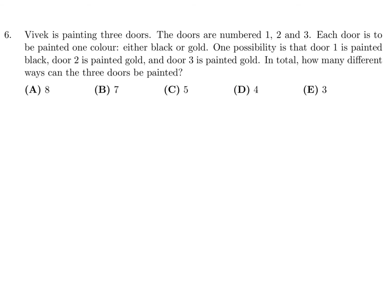Vivek is painting three doors numbered 1, 2, 3. Each door is to be painted one color, either black or gold. In total, how many different ways can the doors be painted? Three doors, two choices for each door - black or gold. You just multiply them, and that gives the total number of choices, which is 6. The answer is A.